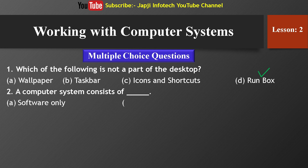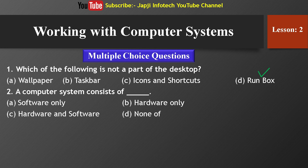Second question: A computer system consists of dash. The options are: software only, hardware only, hardware and software, and none. The right answer is: a computer system consists of hardware and software.